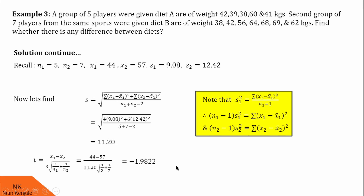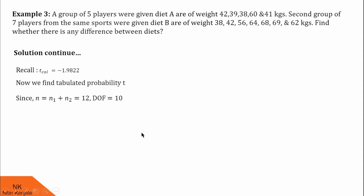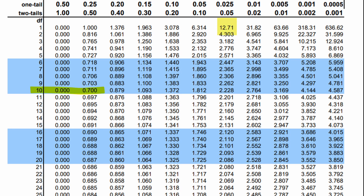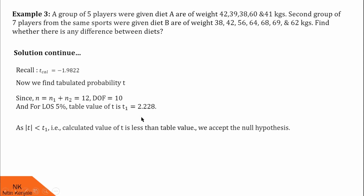Now let us proceed to find the critical value. For critical value, we take LOS 5% and degrees of freedom N1 plus N2 minus 2, that is 12 minus 2 equals 10. Checking the T-table for two-tailed test, degrees of freedom 10, and LOS 0.05, the value is 2.228. Finally, we compare this critical value with the test statistic. We see the mod of the calculated value is less than the table value, so we should accept the null hypothesis — there is no significant difference between the means of two samples, meaning there is no difference between diet A and diet B.